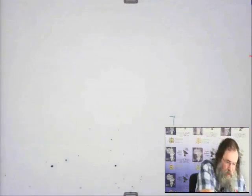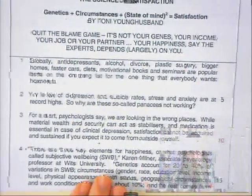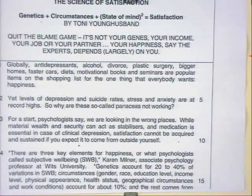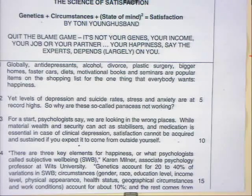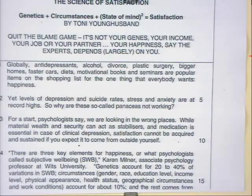Now let us take a look at the first of the texts — I've enlarged these to make them easier to see on your screens. Let's read through this text together now, so that before we review the questions and answers, the text is once again fresh in your minds. It's called 'The Science of Satisfaction.' It features the formula: genetics plus circumstances plus (state of mind)² equals satisfaction. That alone I could base many questions on — it shows the importance of the state of your mind. So before you even read the text, you've already got a very good idea about the message.